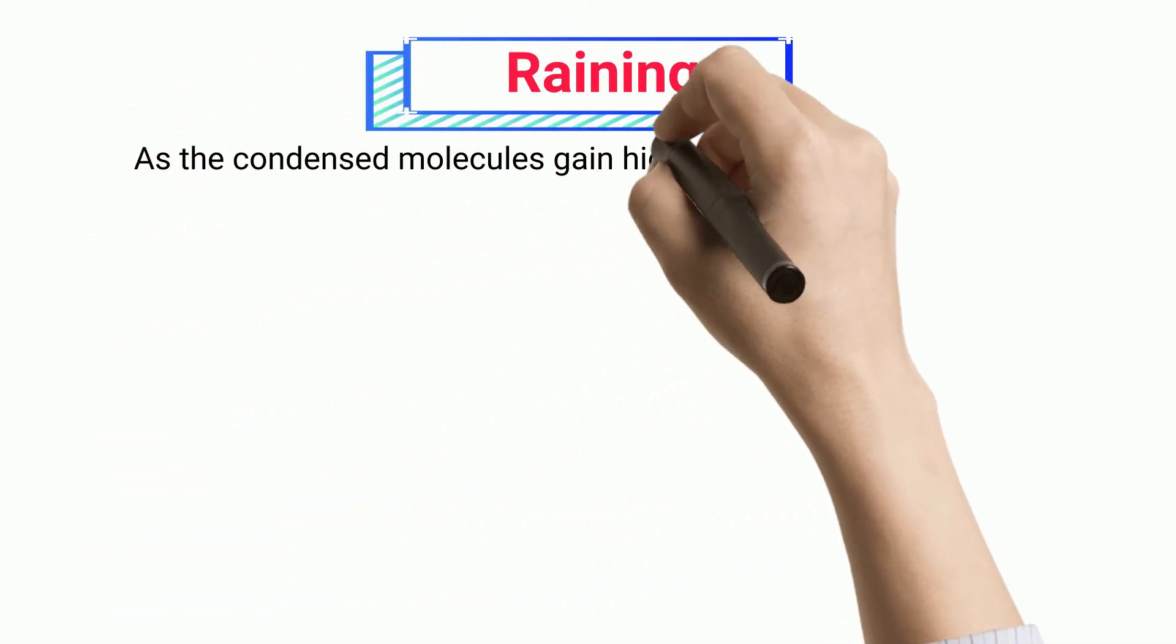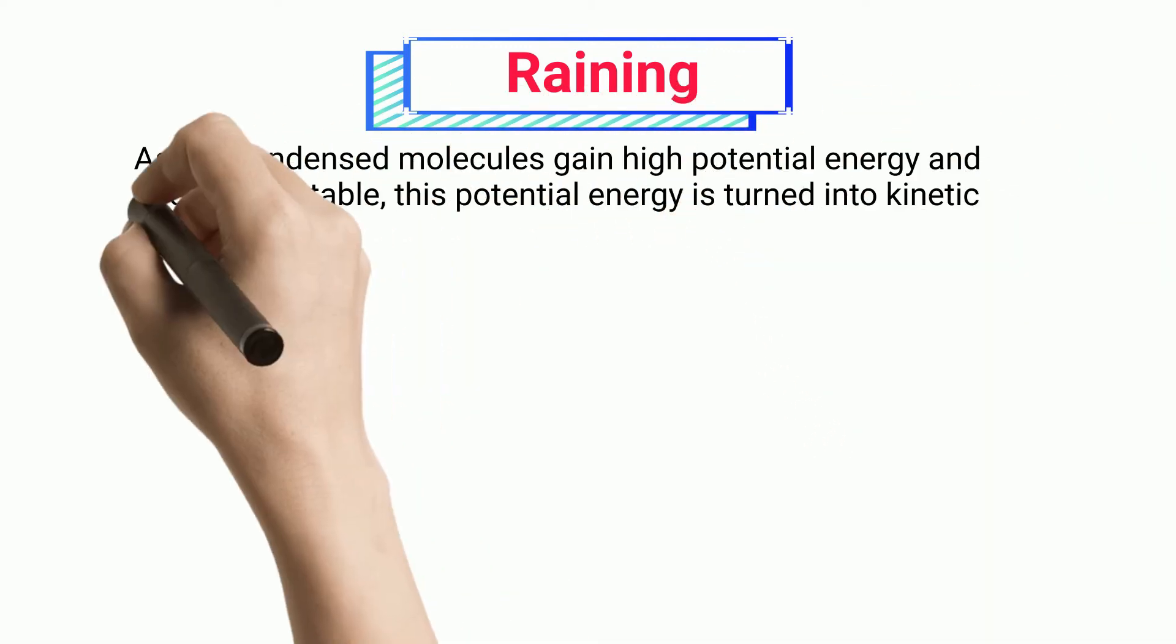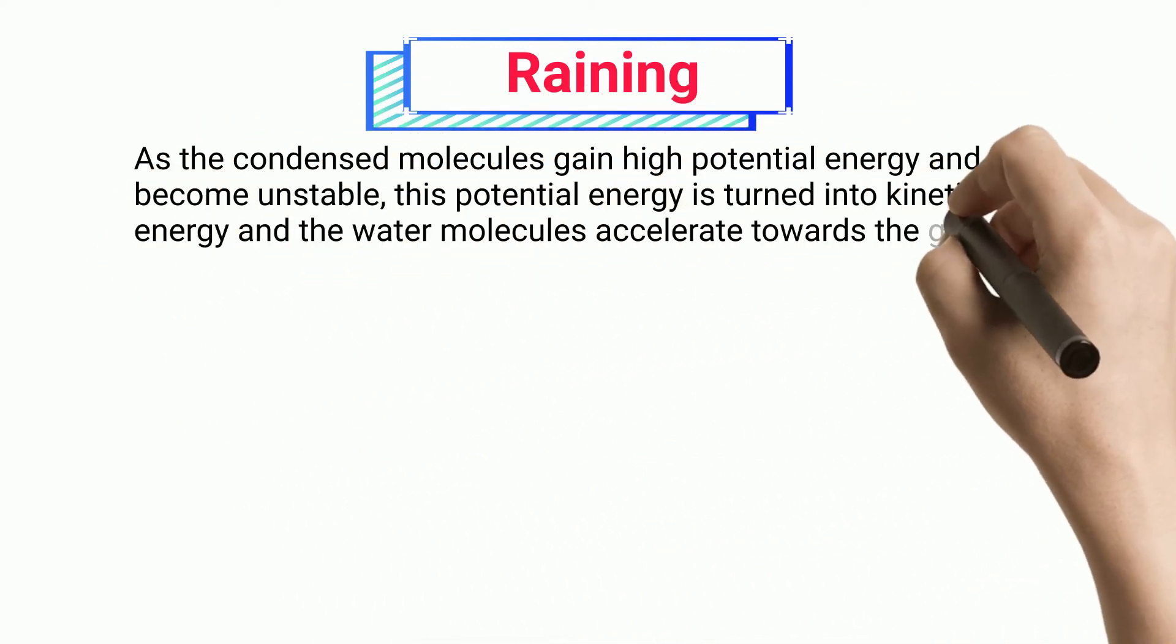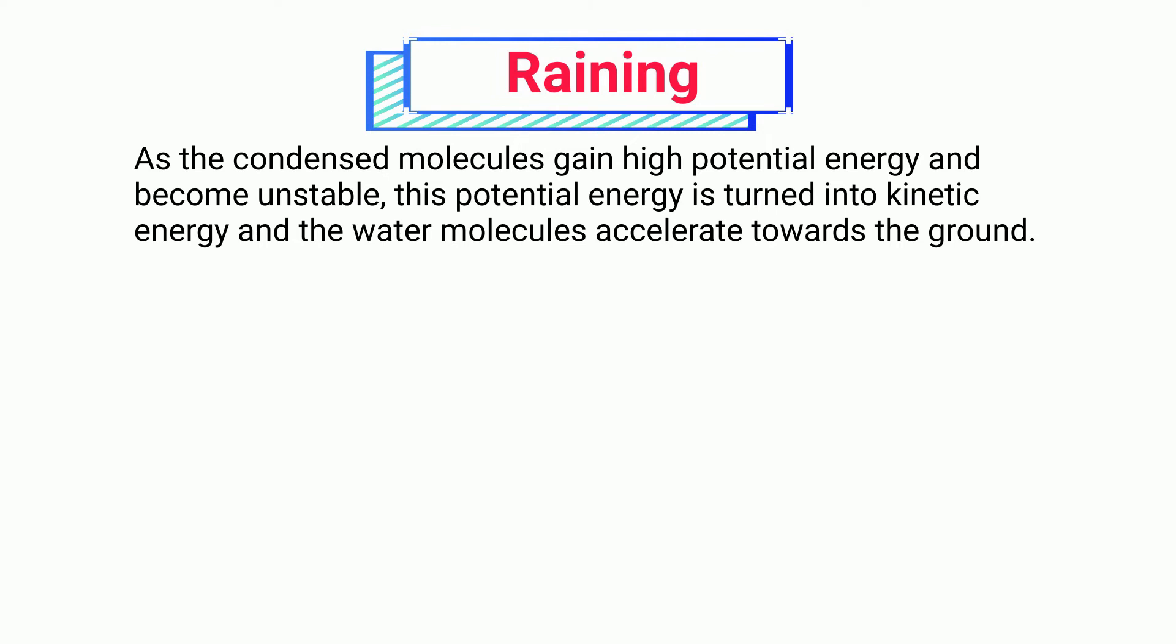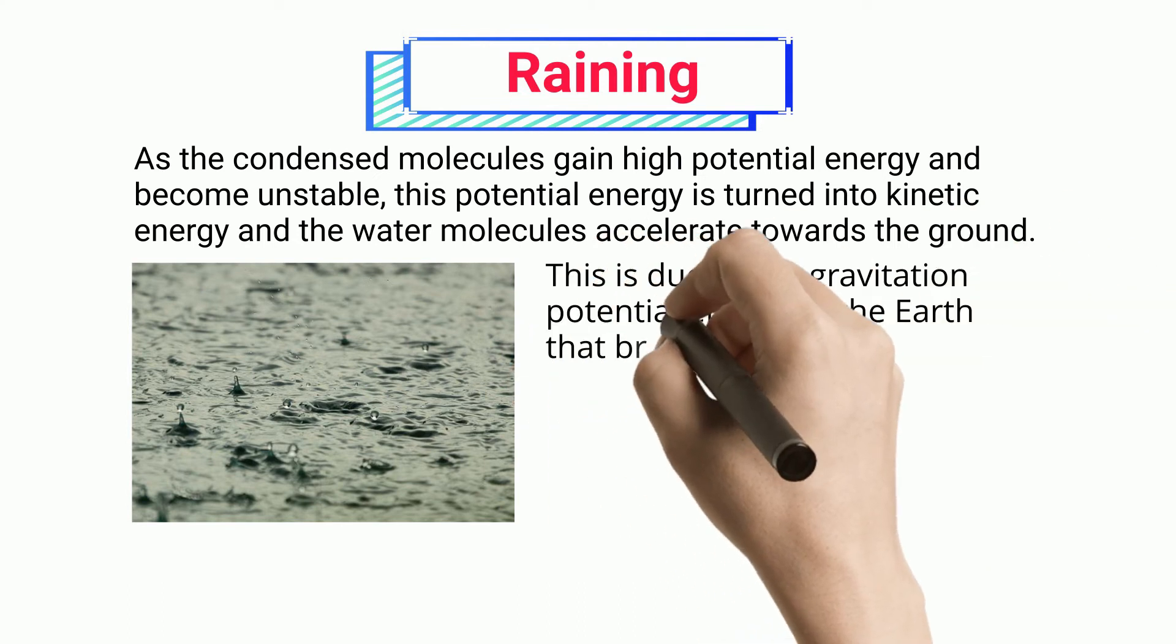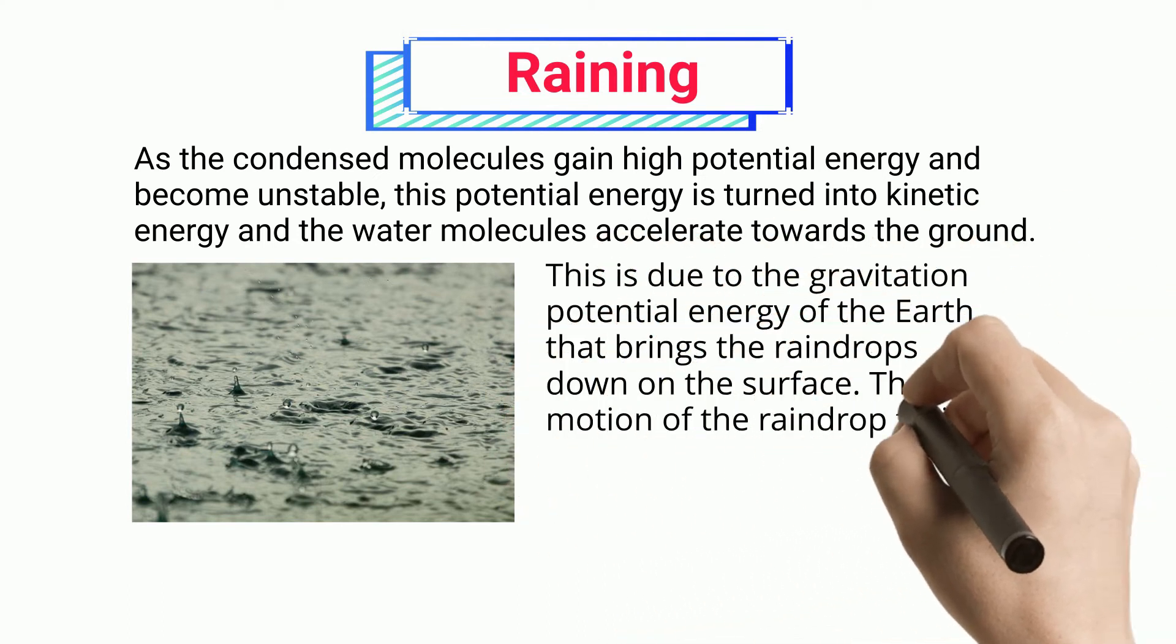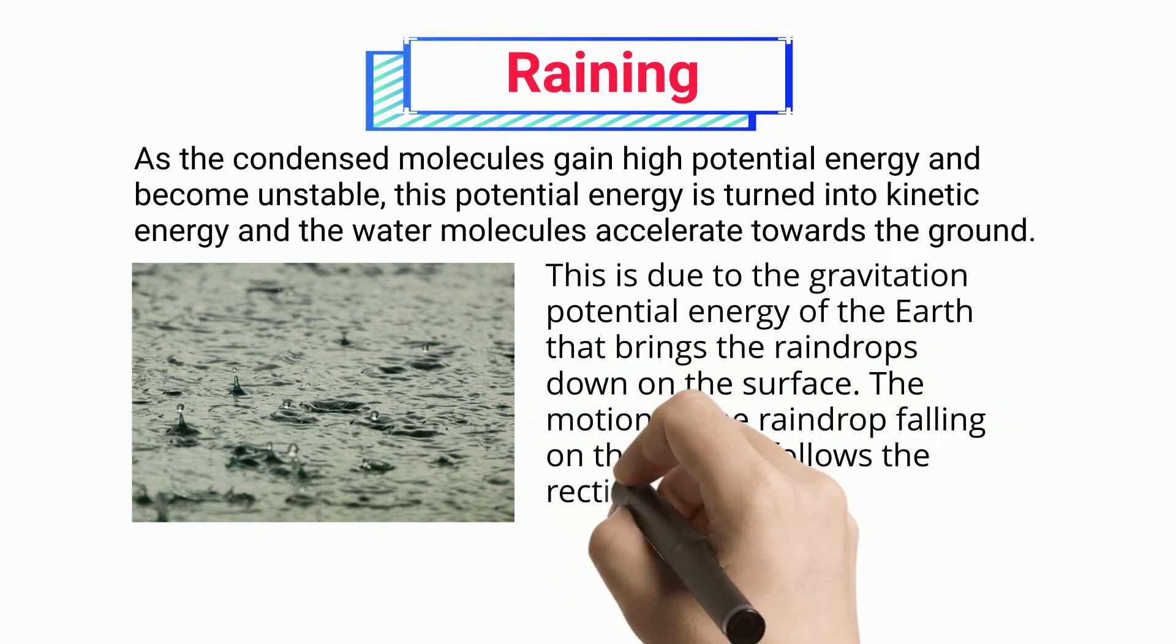Raining: As the condensed molecules gain high potential energy and become unstable, this potential energy is turned into kinetic energy and the water molecules accelerate towards the ground. This is due to the gravitational potential energy of the earth that brings the raindrops down on the surface. The motion of the raindrop falling on the ground follows the rectilinear motion.